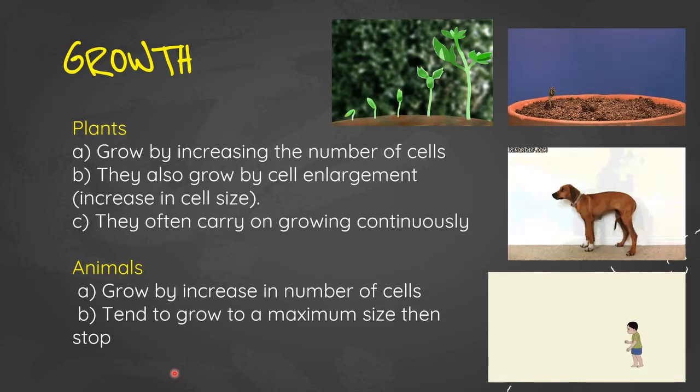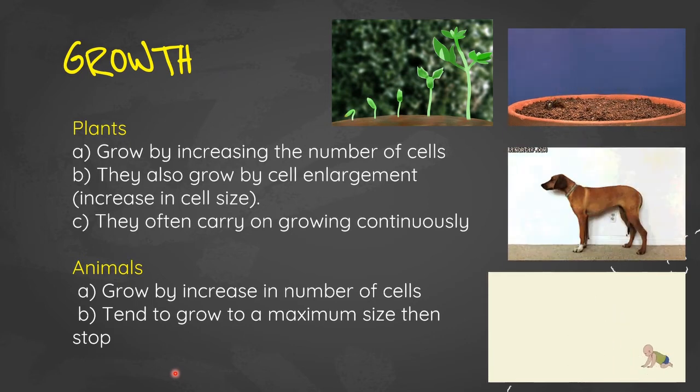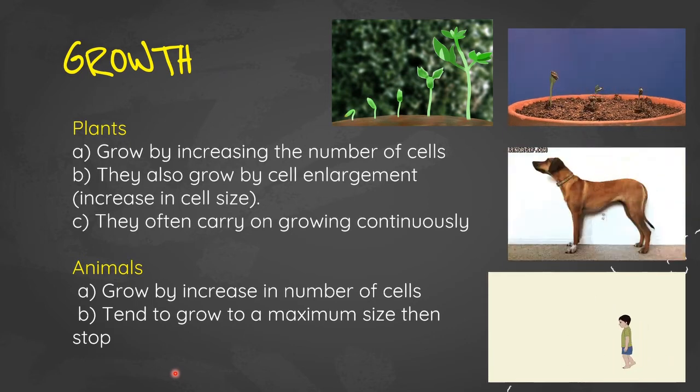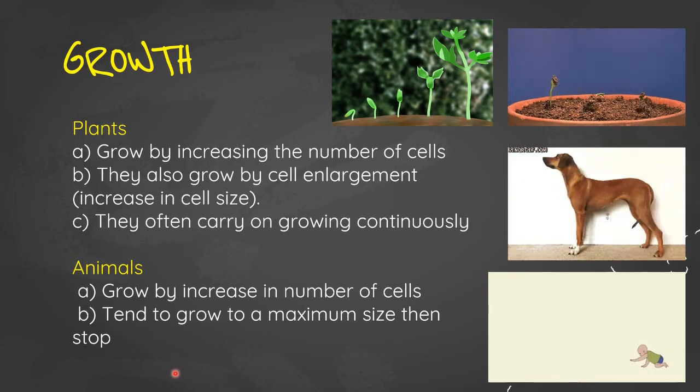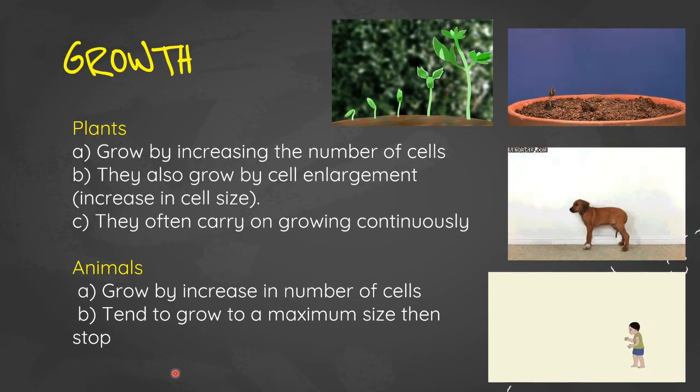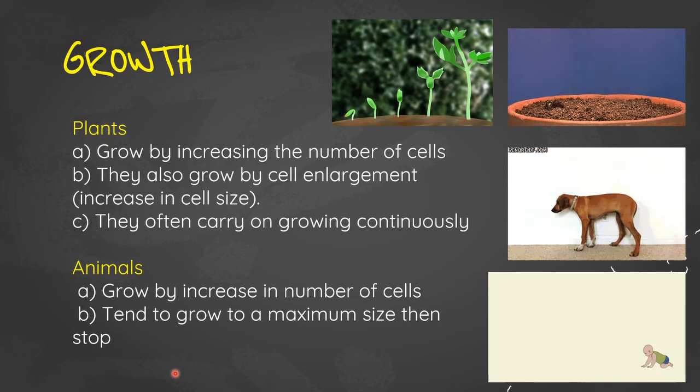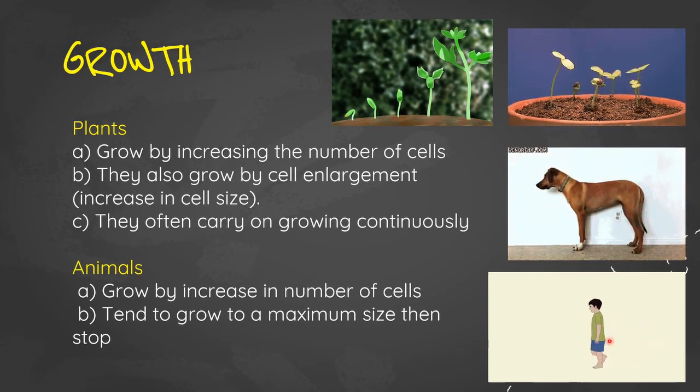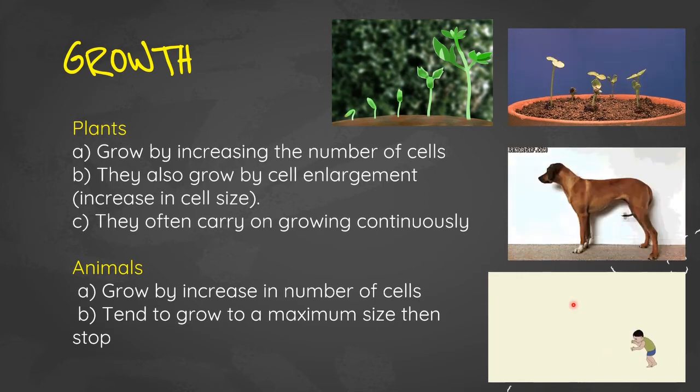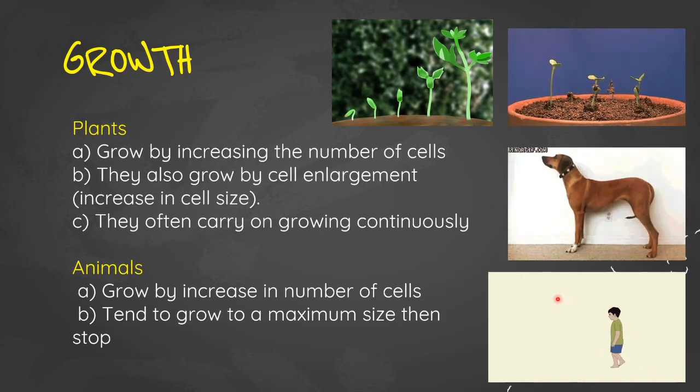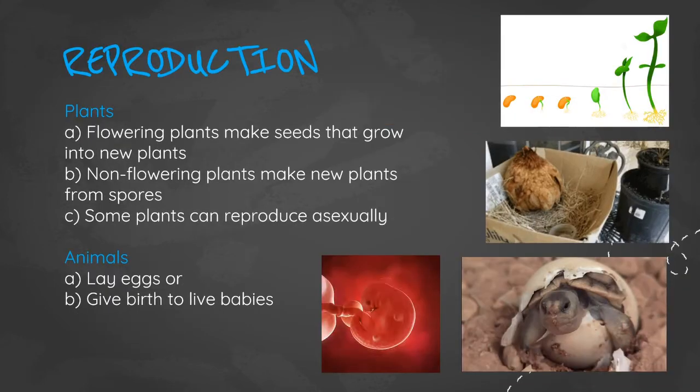Growth. Plants tend to grow by increasing the number of cells and also the size of cells. This is similar in animals, except that the cells tend to grow to a maximum size and stop. That's why when you grow from toddler to adult, at some point your height starts to level off and you no longer get any taller.